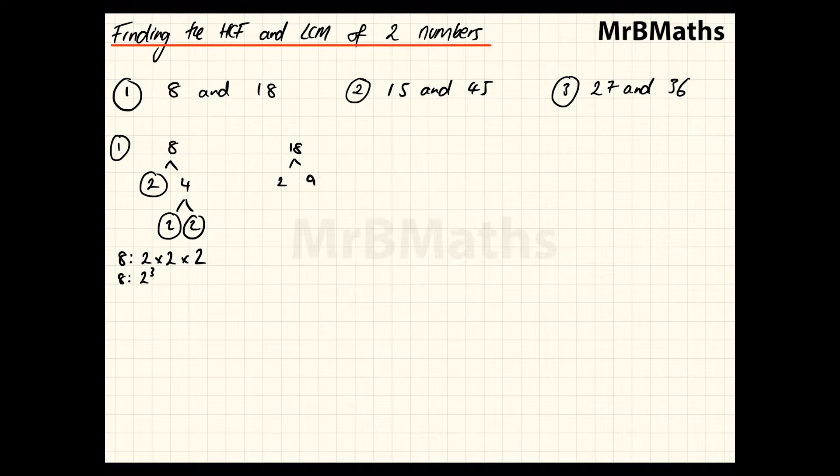If we get on to 18 we have 2 and 9 and then we have 3 and 3, so we have 18 here, 2 times 3 times 3, which is 2 times 3 squared. Now we need our Venn diagram.